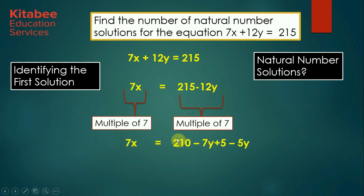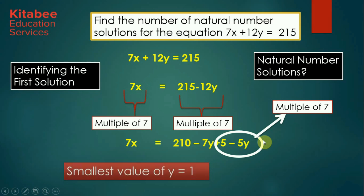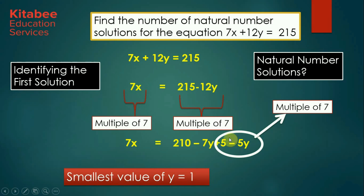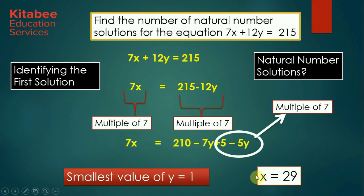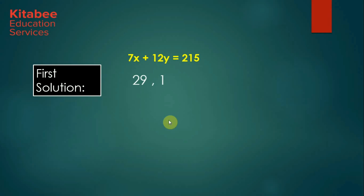The term 5 minus 5y can be written as twice of 3 minus 2x, and we need to make it a multiple of 13. Since 2 is not a multiple of 7, the expression 5 minus 5y itself must be a multiple of 7. The smallest value of y making this a multiple of 7 is y equal to 1, giving 5 minus 5 equal to 0. So when y equals 1, x equals 29. The first solution for 7x plus 12y equal to 215 is 29, 1.